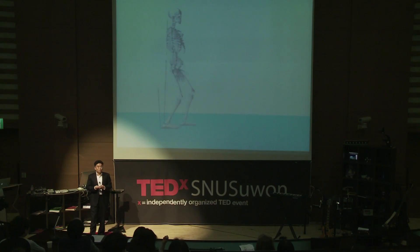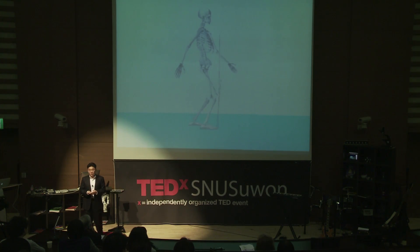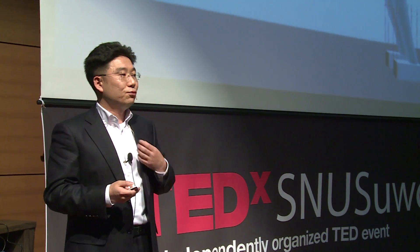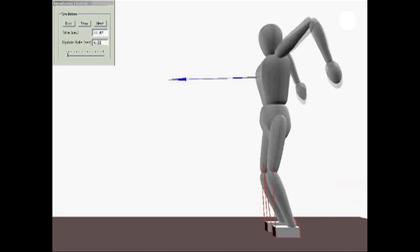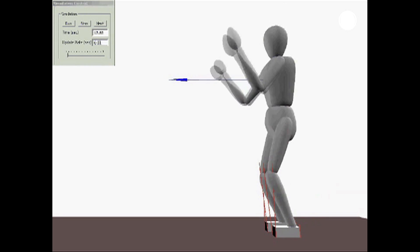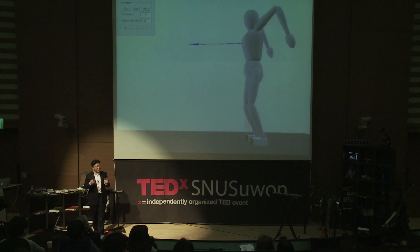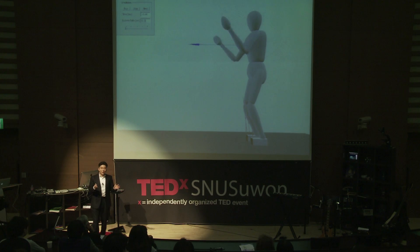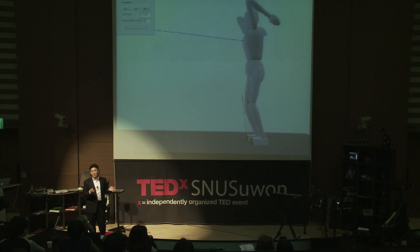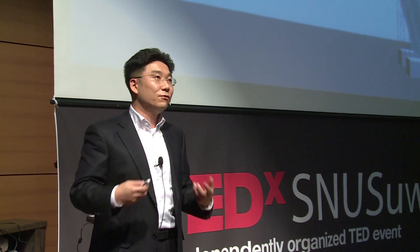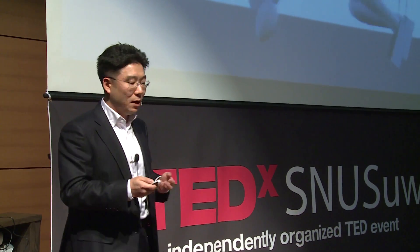Another example of using biomechanics in robotics is balance. I command the robot to stand and maintain balance. If I pull the robot forward — shown here with a blue arrow — the robot tries to make a balance using its arms. I want to emphasize that I did not command the robot to use arms; this arm swing motion came out from the algorithm, which understands the physical properties of the robot. That's why it rotates the arms to make balance.